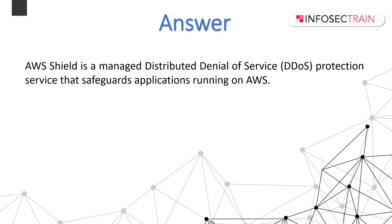A DDoS attack is an attack in which multiple compromised systems try to flood a target with traffic. A DDoS attack can prevent legitimate end users from accessing the target service and can cause the target to crash due to overwhelming traffic volume. AWS Shield provides protection against a wide range of known DDoS attacks and zero-day attack vectors. Shield detection and mitigation is designed to provide coverage against threats.